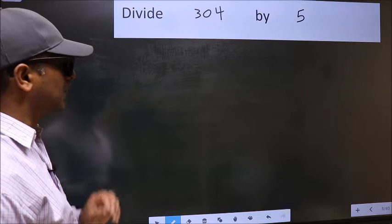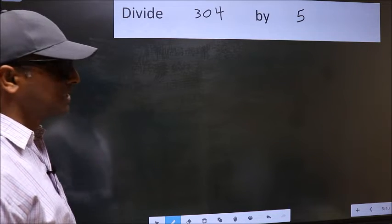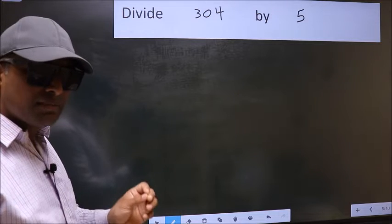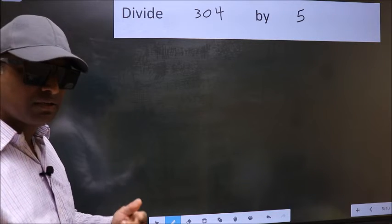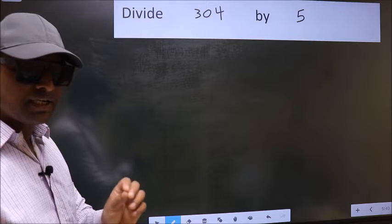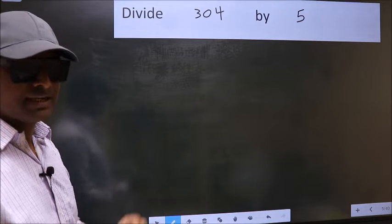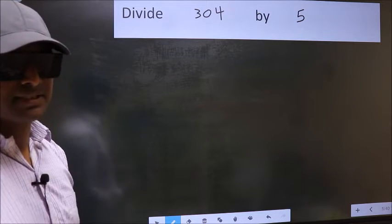Divide 304 by 5. While doing this division, many make this mistake. What is the mistake that they make? I will let you know. But before that, we should frame it in this way.